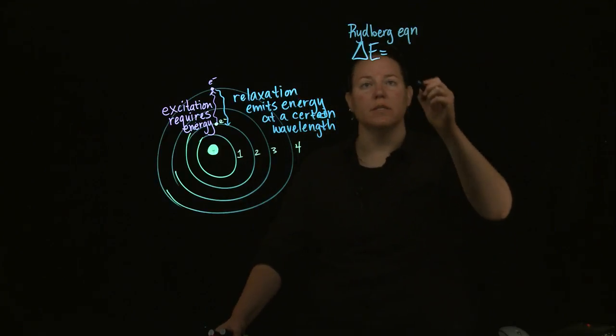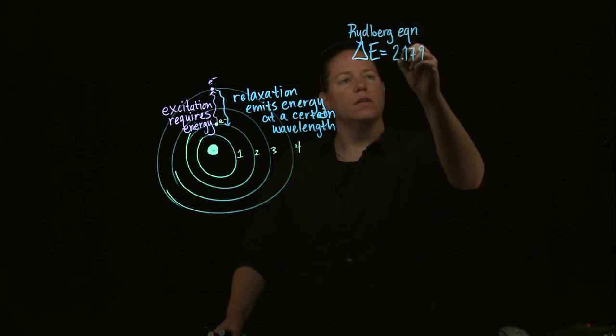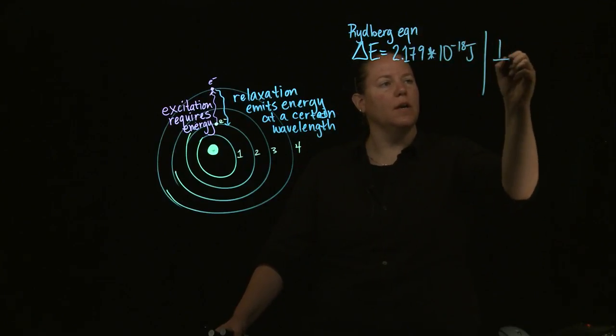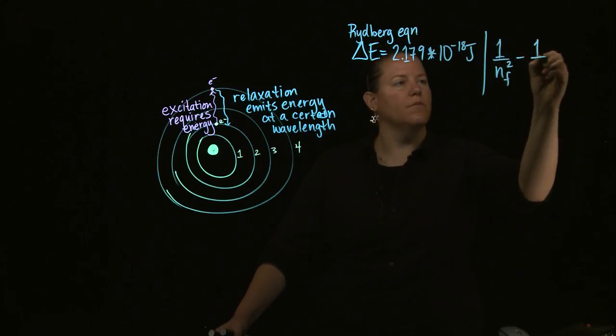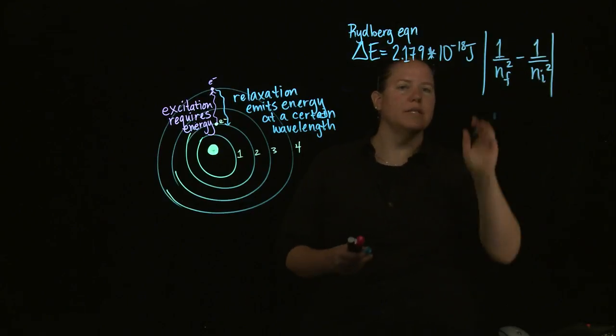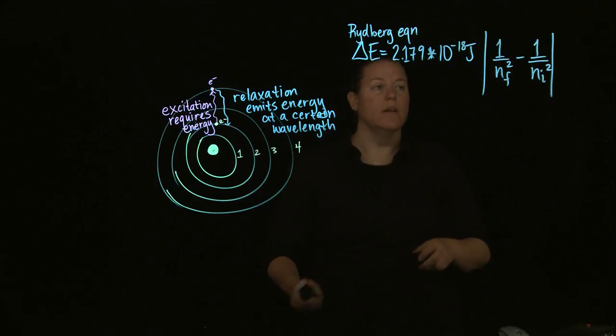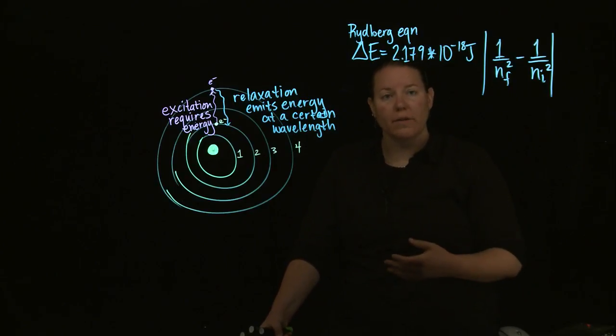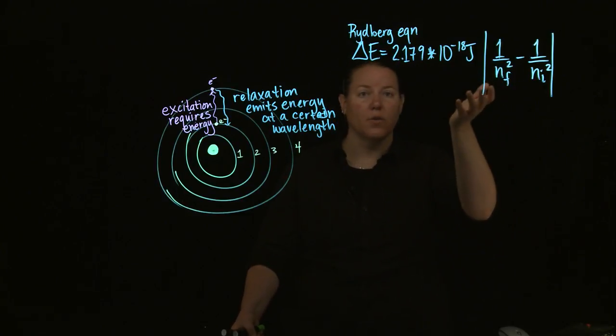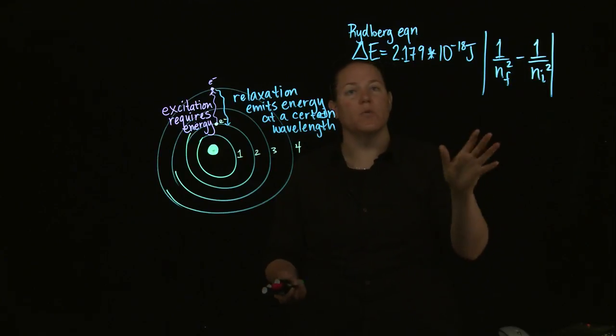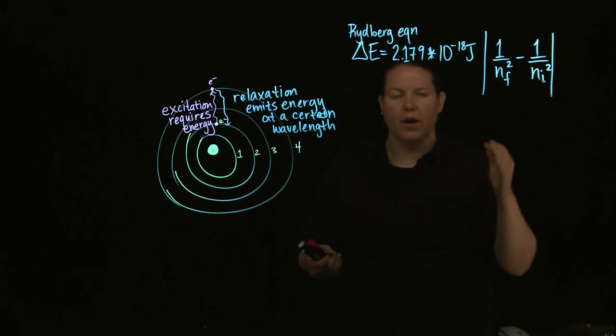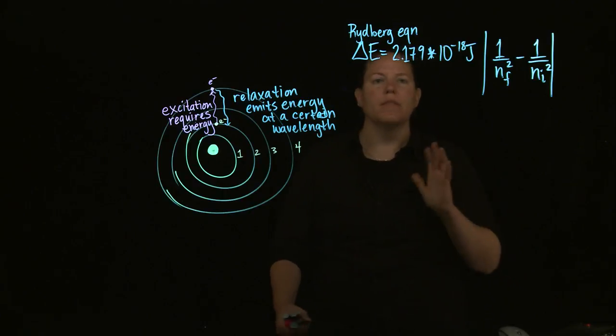Rydberg actually came up with several different constants. The one we typically use is 2.179 times 10 to the negative 18th joules times the absolute value of the inverse squares, the difference of the inverse squares between the levels. Now, is this exactly how it looks in your book? Probably not. The reason why is because here I'm calculating an energy change.